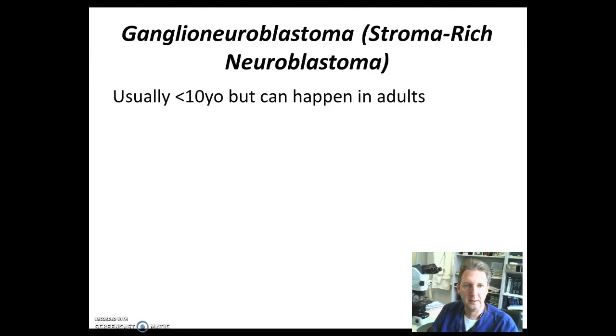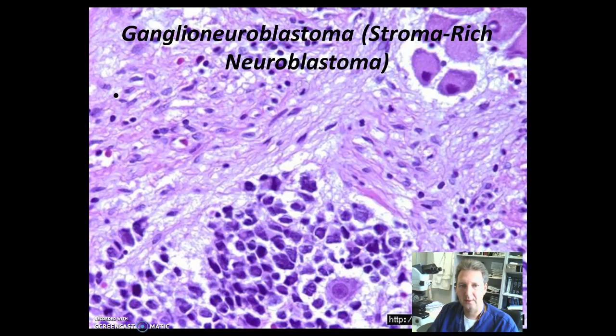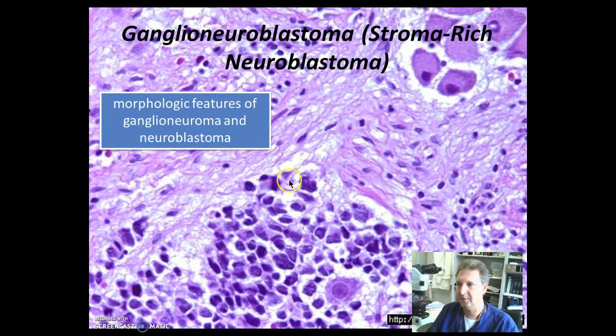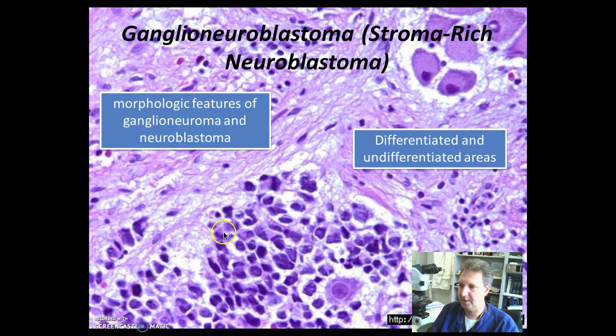The ganglioneuroblastoma, also called stroma-rich neuroblastoma, is usually seen in kids less than ten years old, but can also happen in adults. This is a mixed population of ganglioneuroma and neuroblastoma, where you can see more differentiated and poorly differentiated areas of neuroblasts and ganglion cells. With this I conclude adrenal gland tumors. Thank you so much for your attention.